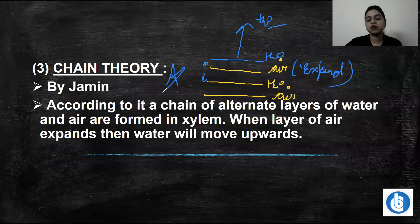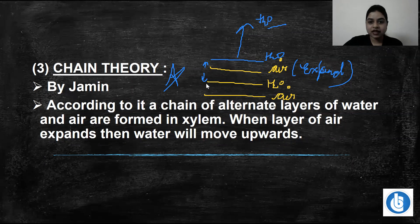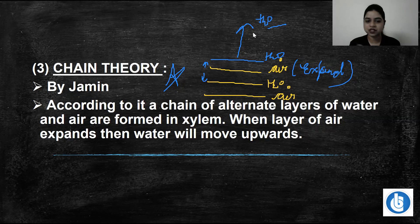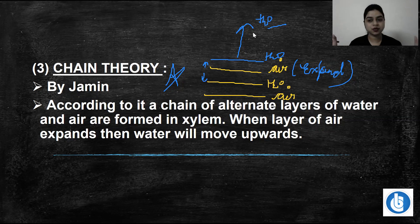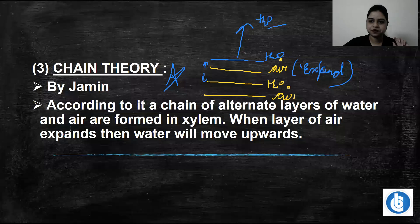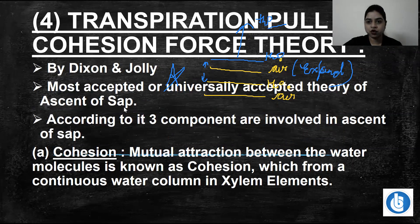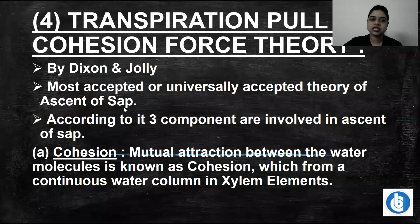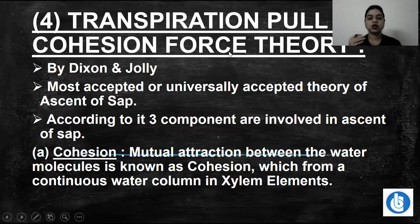That expansion of the air layer is responsible for shifting water molecules up. Now the most widely accepted theory is Dixon and Jolly's theory, also known as the Transpiration Pull theory.